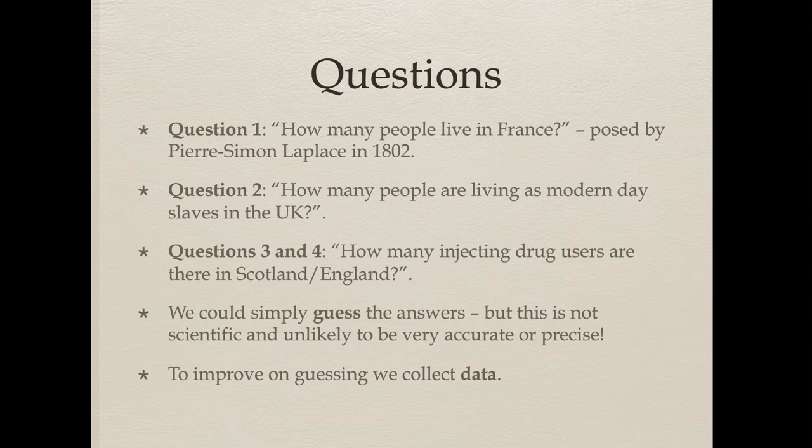Then we're going to look at three modern day questions: how many people are living as modern day slaves in the UK — some of you may have seen newspaper articles on this last November/December; how many injecting drug users are there in different parts of the UK, particularly England and Scotland. Obviously these are all difficult questions we cannot simply count. We can't send a survey around and say 'are you an injecting drug user?' — people are not typically going to answer that honestly. So what do we do? We could simply guess, but that's not very scientific and unlikely to be accurate. I will come back to this idea of guessing later when asking question four about the injecting drug user population of England.